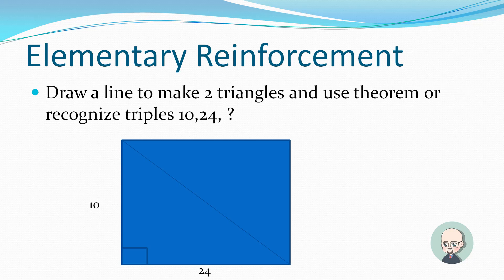We're back. Let's draw a line to make two triangles and use the theorem or recognize triplets. Remember we had those triples? Remember I told you that those ratios were important? You didn't believe me. Remember the 3, 4, 5? What were those other two? You can rewind if you want to. Or you could solve it using the Pythagorean Theorem.